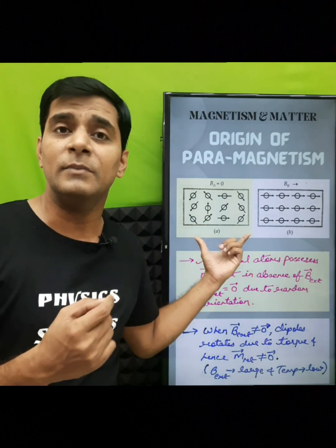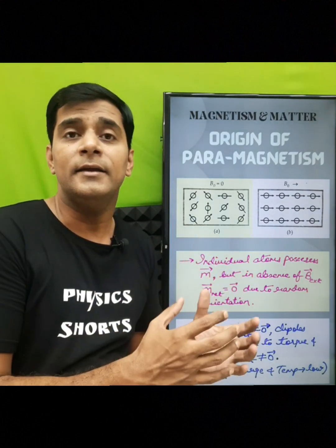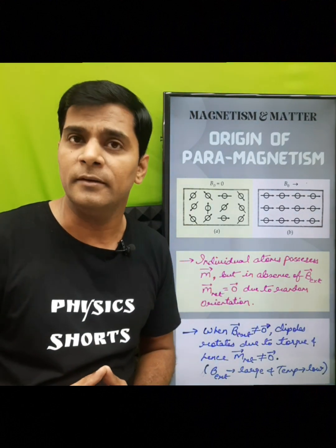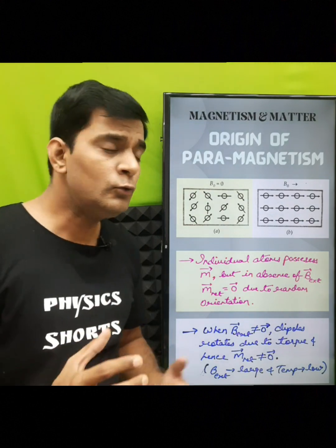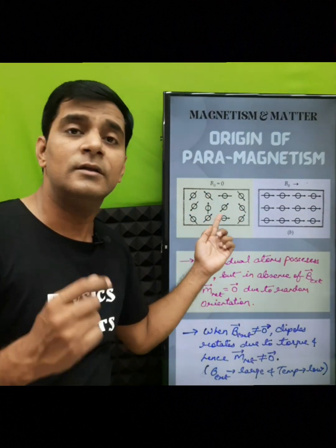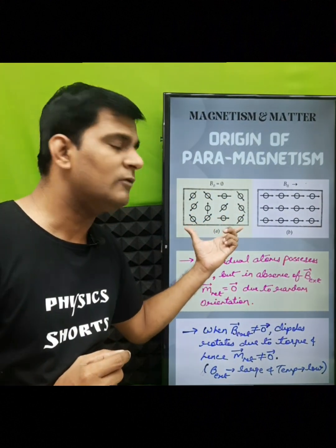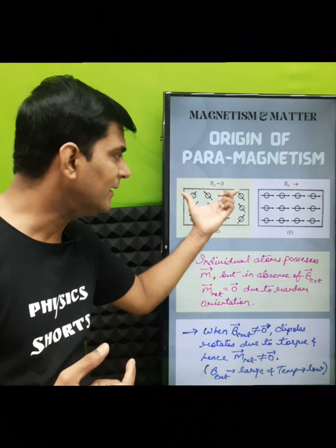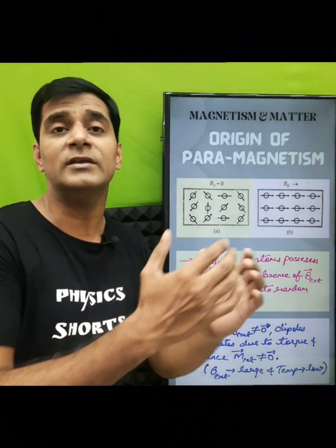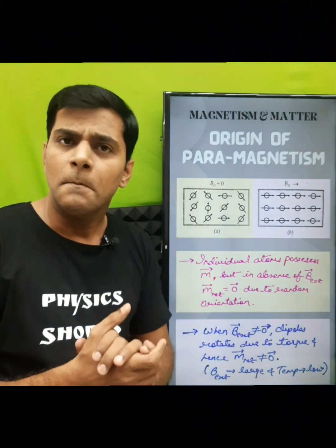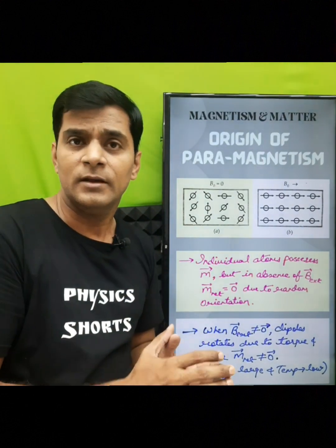In case of a paramagnetic material, each molecule or atom possesses some magnetic dipole moment, which is given by m. But due to their random orientation, the net dipole moment will be equal to zero, and hence we can say the magnetization is zero in the absence of an external field.